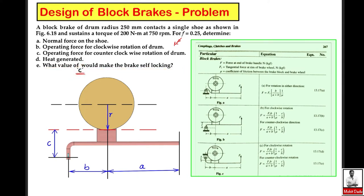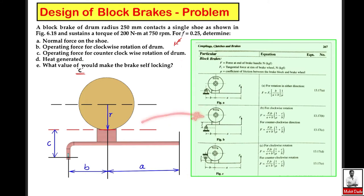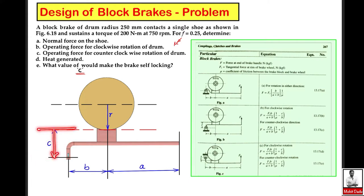We know how to draw the direction of the tangential force based on the direction of rotation. For this given configuration, the required equations are shown in the data book. This geometry corresponds to the case where the distance c is between the pivot and the contact interface where friction happens. Note: c is this specific distance, as clearly seen in the figure.